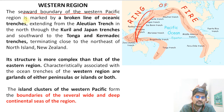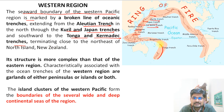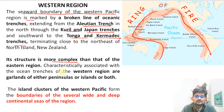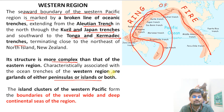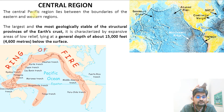The seaward boundary of the Western Pacific region is marked by a broken line of oceanic trenches — the Aleutian, Kuril, Japanese, Tonga, Kermadec, and several other named trenches. This entire western margin is full of trenches and is more complex and tectonically more active than the eastern region, with several islands and peninsulas located in this belt. The island clusters of the western Pacific form the boundaries of several wide and deep continental seas.